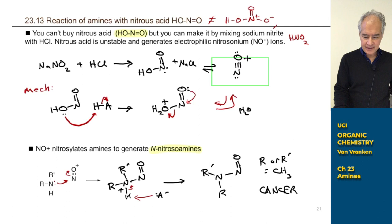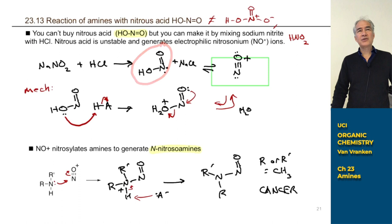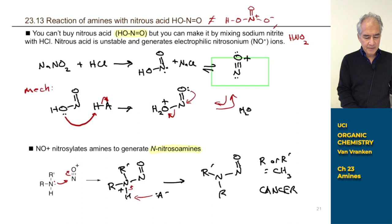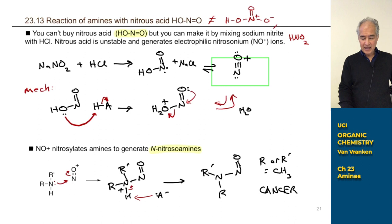Nitrous acid — totally different from nitric acid. Nitric acid has three oxygens. Nitrous acid has only two oxygens and is not stable. You can't buy it anywhere. You make it in the lab by mixing sodium nitrite — a white powder — with hydrochloric acid. That makes small amounts of unstable nitrous acid, which is in equilibrium with the nitrosonium ion, NO+. And that's reactive — nitrosonium ions react with amines.